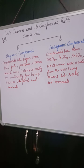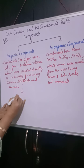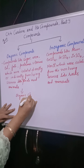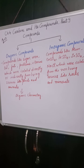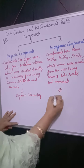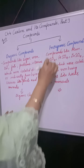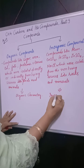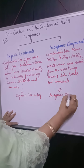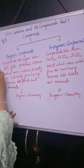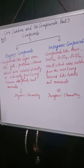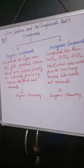The branch of chemistry which deals with the study of organic compounds is known as organic chemistry. The branch which deals with inorganic compounds is inorganic chemistry. The point is very simple: organic compounds can only be obtained directly or indirectly from living sources.